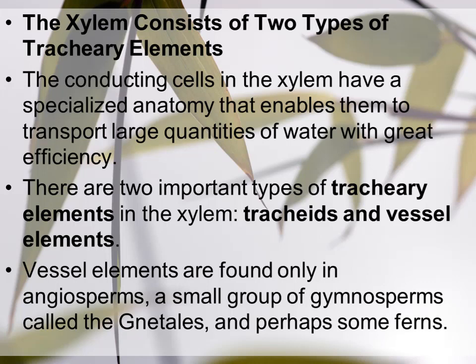Vessel elements are found only in angiosperms, a small group of gymnosperms called gnetales, and perhaps some ferns. In gymnosperms, only the gnetales group has vessel elements; the rest of gymnosperms have only tracheids. Some ferns also have vessel elements but in most ferns they are absent. Tracheids, by contrast, are present in angiosperms, gymnosperms, and ferns alike.